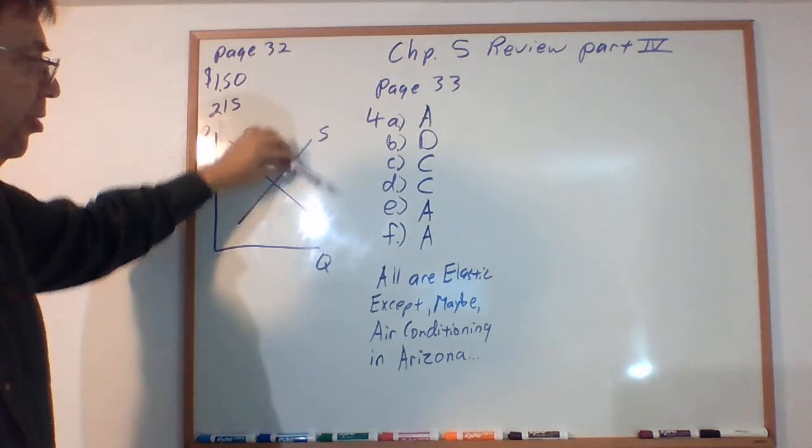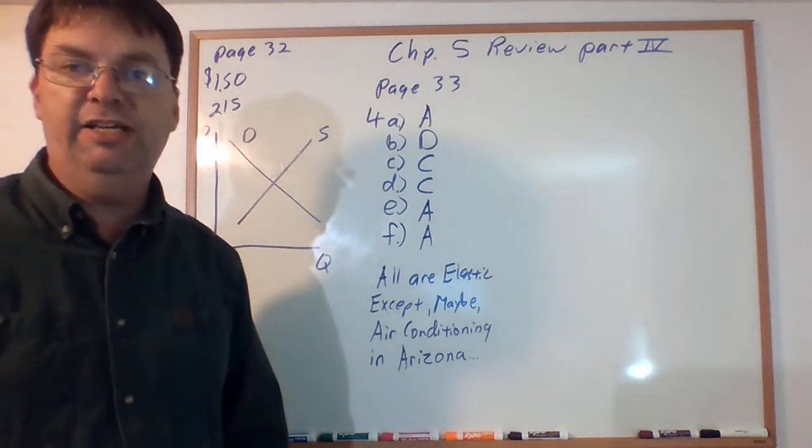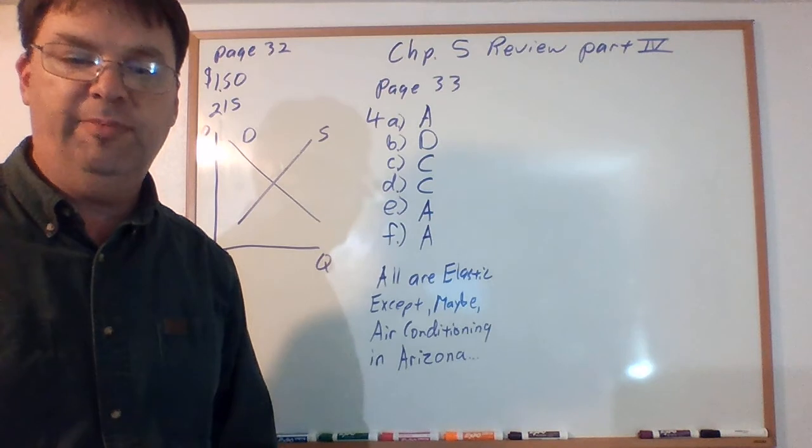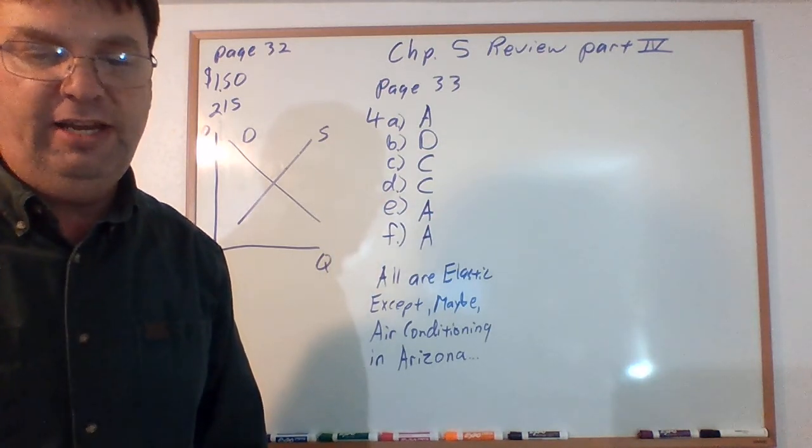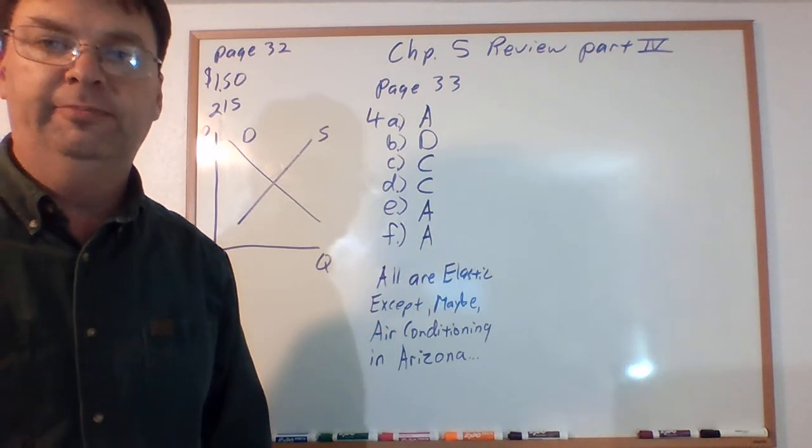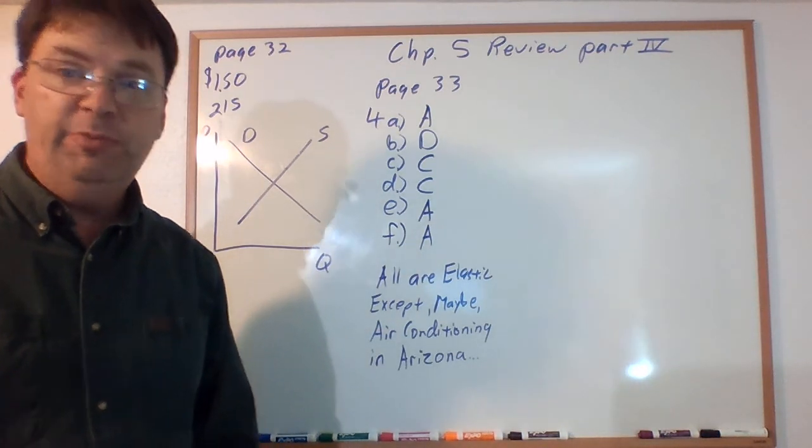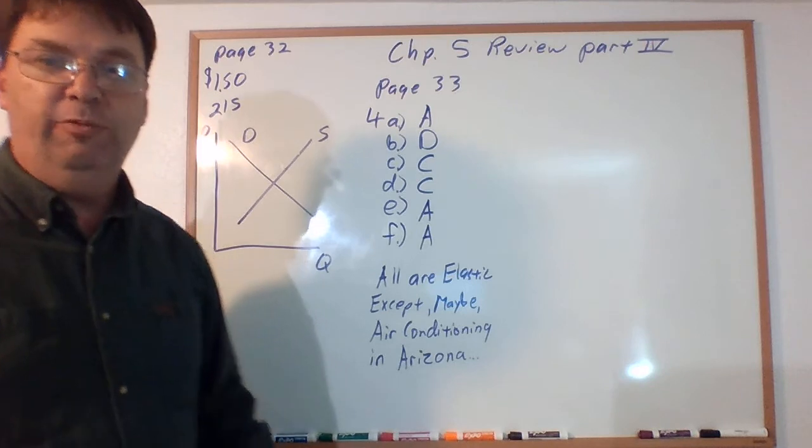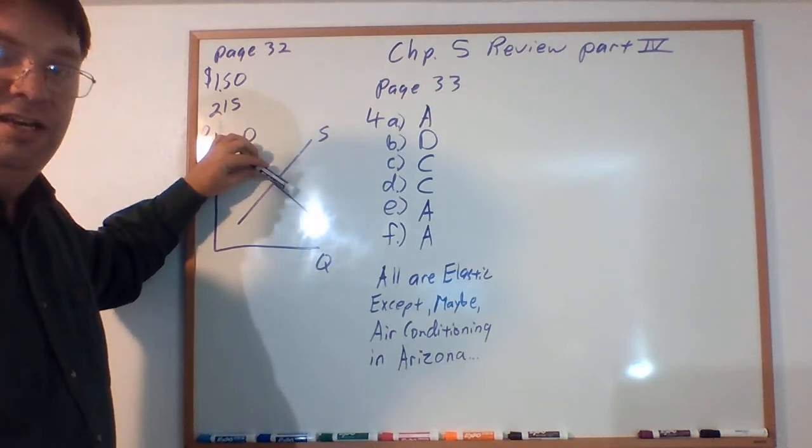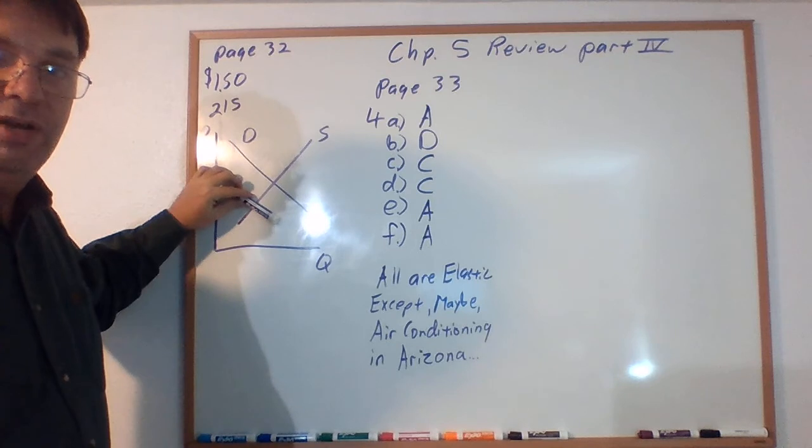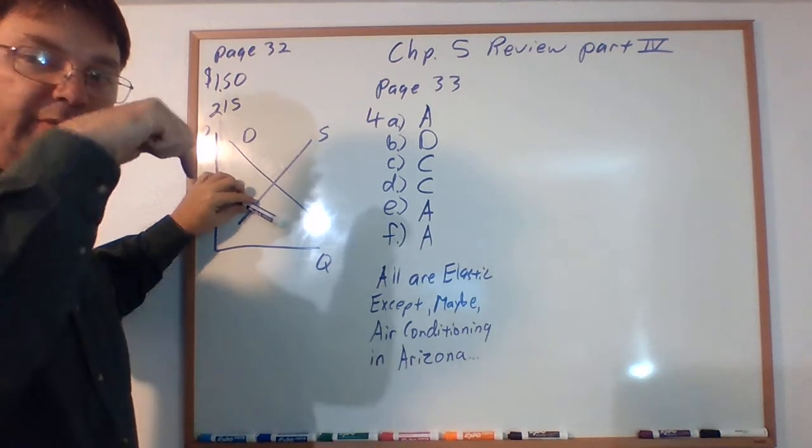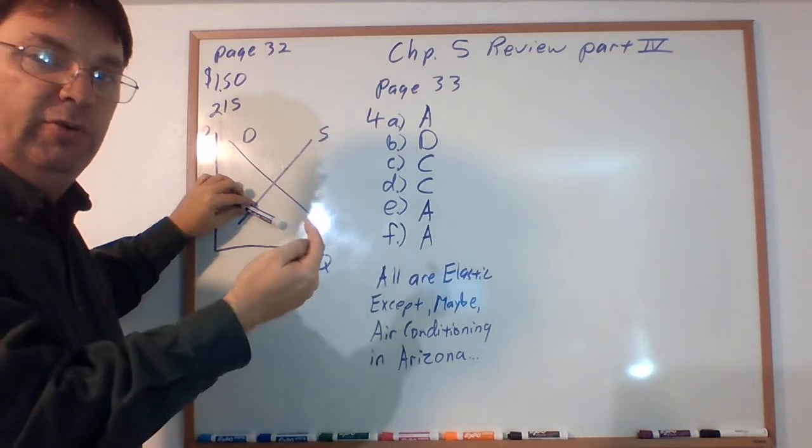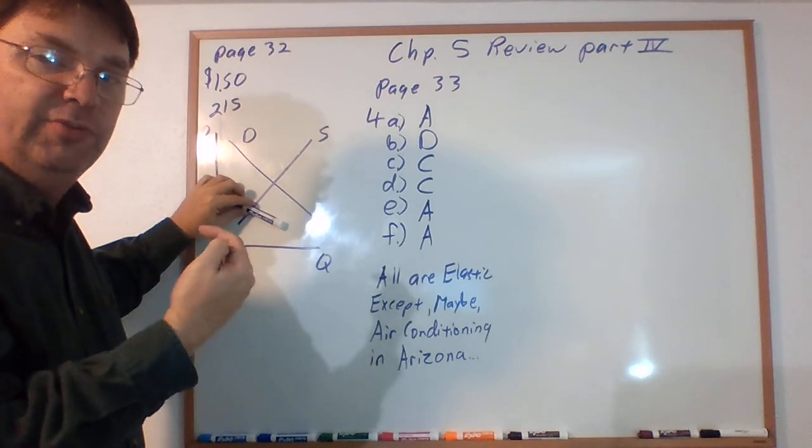Suppose the Surgeon General announced that eating corn will turn the whites of your eyes yellow. Well, most people probably don't want that except for maybe Halloween or something. So your demand curve in this case is going to shift this way because that's going to be people wanting less at each and every price. What happens to your overall prices? It goes down. What happens to your quantity? It shrinks back in this way. So you have a lower price and a lower quantity when that happens.